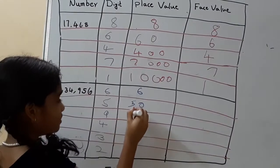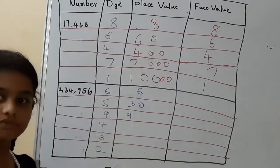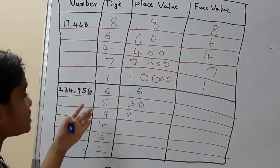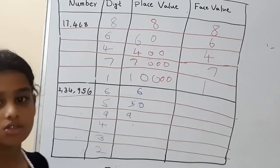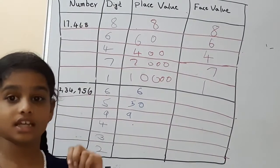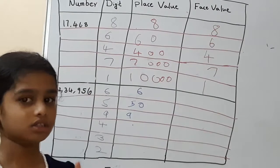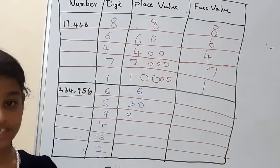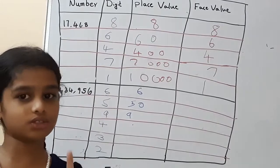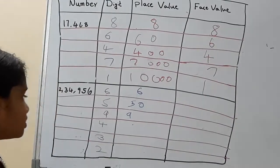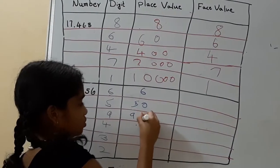And 9. What is the place value of 9? It is in 100's place. So in 100, we have 1, 0, 0. So how many zeros are there in 100? Two zeros. So now let's write two zeros.